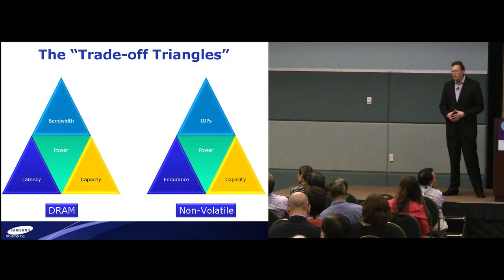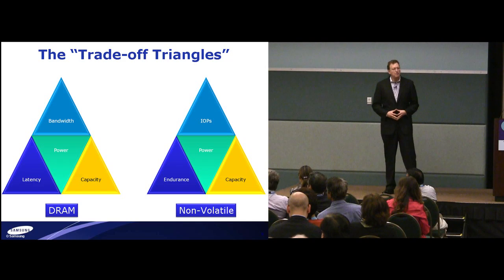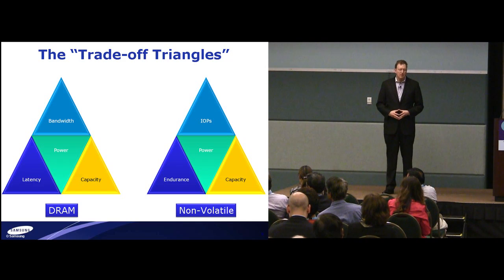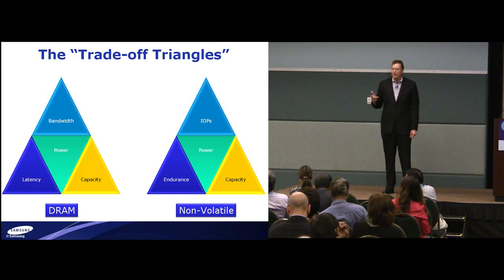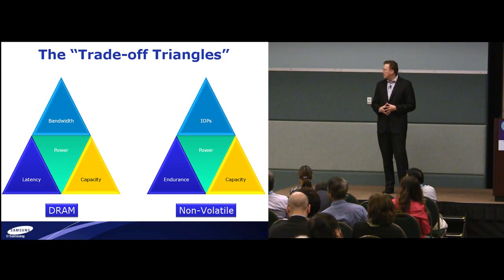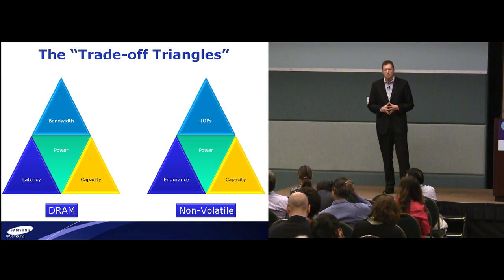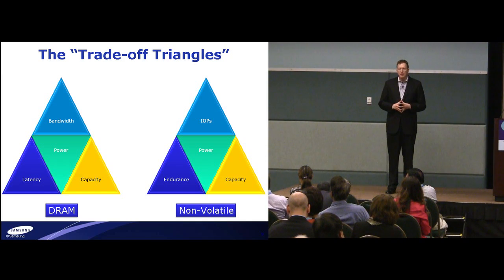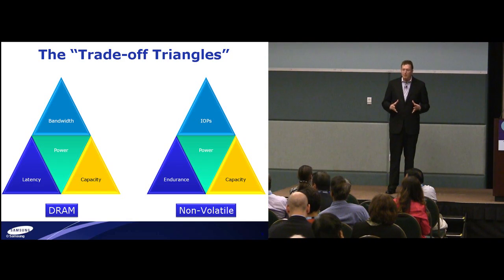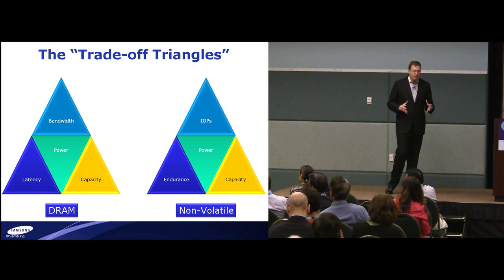These are what I call the trade-off triangles in memory and flash. In DRAM, it's bandwidth, latency, capacity, and power as the invariant. In flash, it's IOPS, capacity, and endurance — that's your fundamental trade-off. These elements are things that we have to work with. If you could let go of one of these parameters, you could optimize a lot. But unfortunately, we're not going to be allowed to let go of any of these parameters.